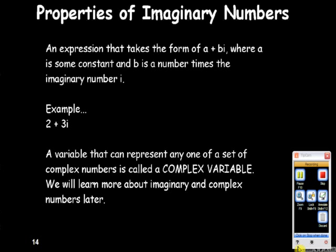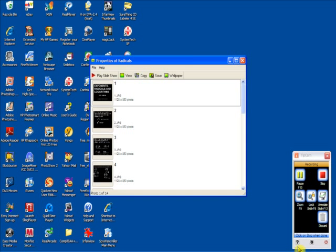An expression that takes the form of a plus bi, where a is some real number and bi is an imaginary number, this is what you call a complex number. This is a complex number. Any variable that represents a set of complex numbers is called a complex variable. We'll talk about that later.